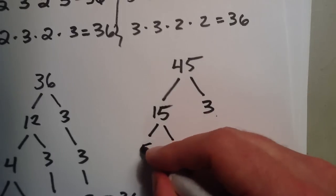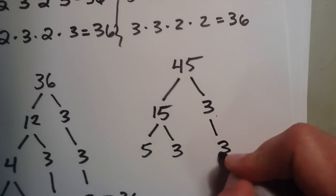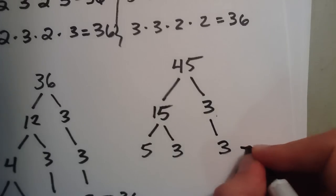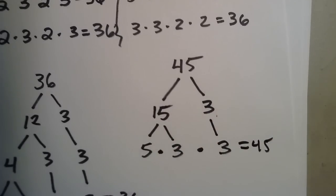15 can be broken up into 5 times 3. We'll bring this down since it's already prime. So 5 times 3 times 3 equals 45. And 5 and 3 are both prime numbers. So we've broken down 45 into its prime components.